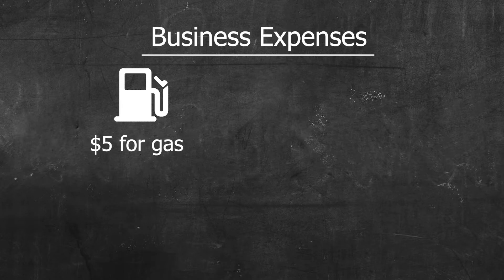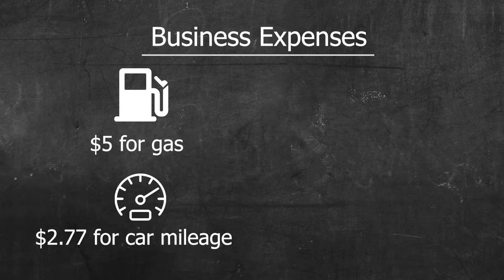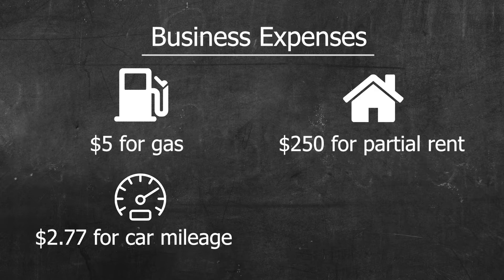What it means is that you can label some things that you normally would just pay for on your own as business expenses instead. For example, if you use your personal car to shop for ingredients for your food truck, you can claim part of your gasoline costs and car mileage as a business expense. If you do most of the cooking for your food truck at home, you may be able to claim part of your rent and/or part of your cooking gas bill as a business expense.